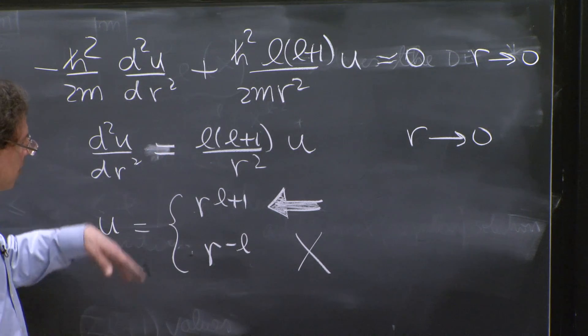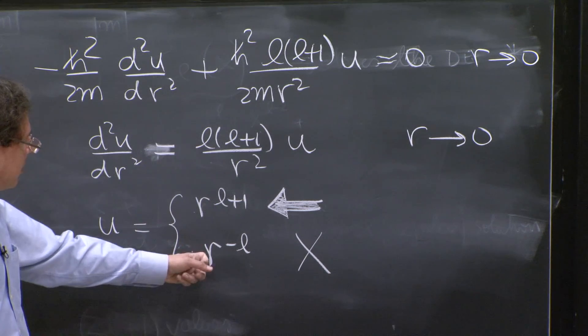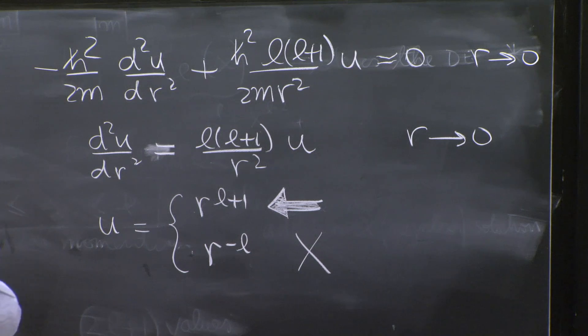But for l equals 0, there's another reason why this is not good. It turns out that for l equals 0, this doesn't quite solve the Schrödinger equation, the exact Schrödinger equation.